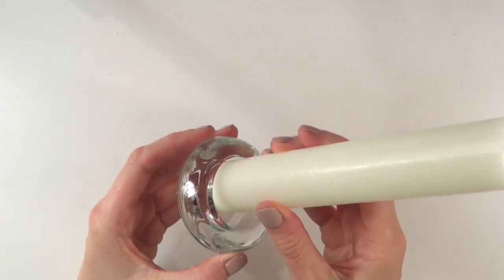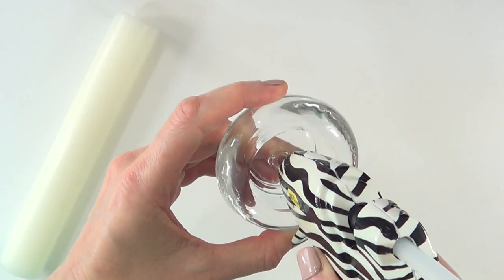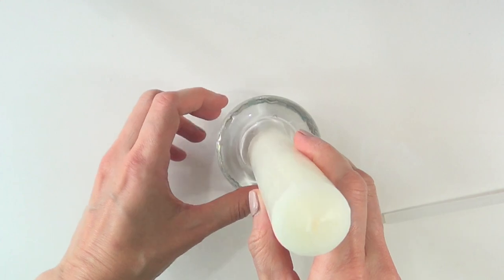So as you can see, it's a bit too big for it. So I'm going to be using a hot glue gun and I'm just going to hot glue my candle to the base.